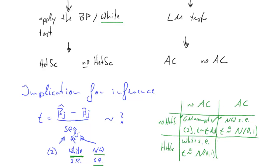And then the fourth case, what happens if you have autocorrelation and heteroscedasticity? Well, we will again have to use the Newey-West standard errors. Newey-West standard errors take care of autocorrelation and heteroscedasticity. And again, the t-test is normally distributed asymptotically.